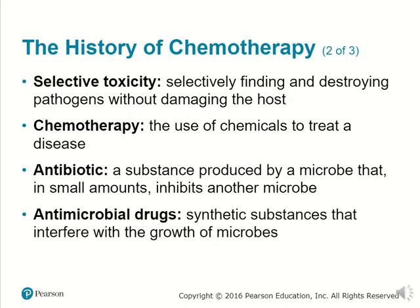Now looking into some new terms and the history of chemotherapy — the therapeutic use of chemicals. There is selective toxicity, which is the selective finding and destroying of pathogens without damaging the host. There is chemotherapy that uses chemicals to treat a disease. Antibiotics are substances produced by a microbe that in small amounts inhibit another microbe from growing. And antimicrobial drugs are synthetic, man-made substances that interfere with the growth of microbes.